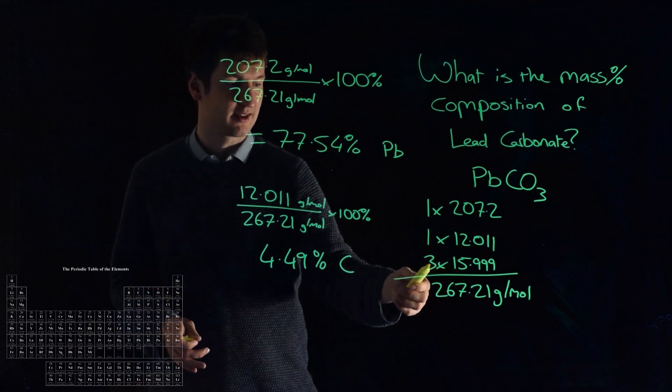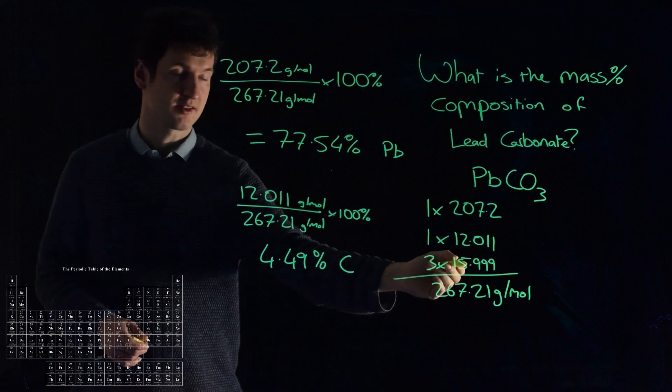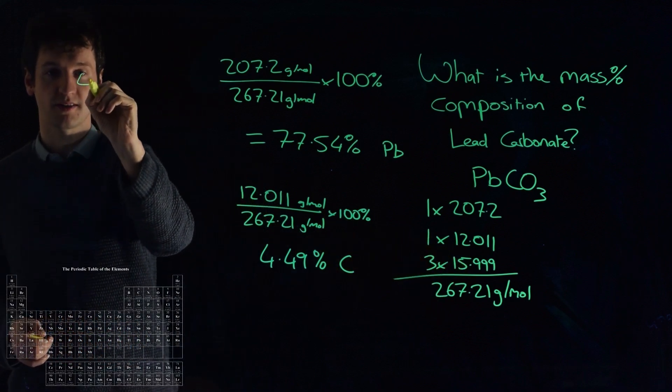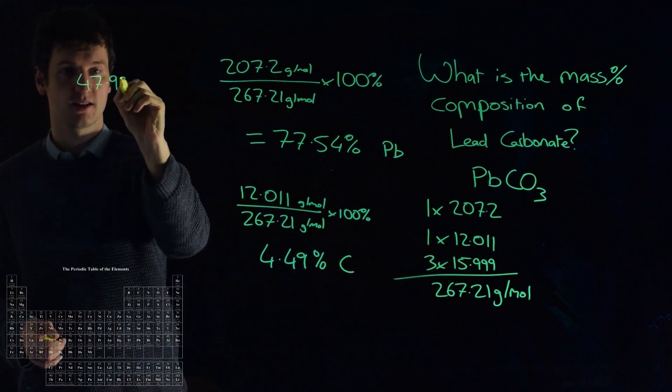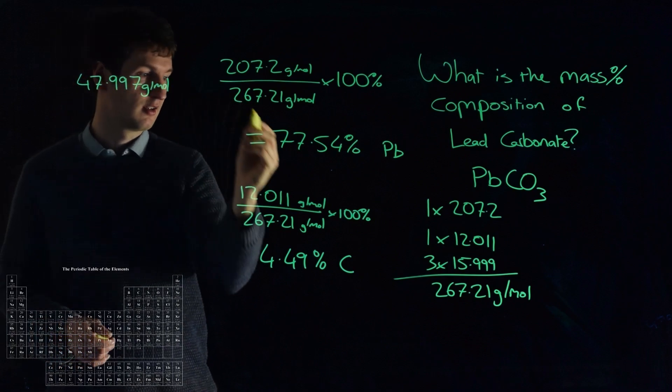Or you can do it the same way. So 3 by 15.999 is 47.997. So 47.997 grams per mole are oxygen.